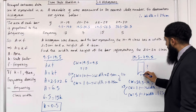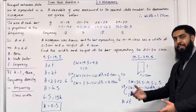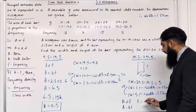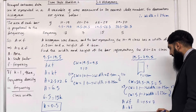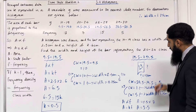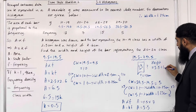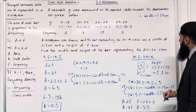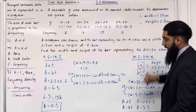Now we calculate the area of the bar. Using A equals KF, the area equals K times F, which is 0.5 multiplied by the frequency of this class interval, which is 7. So 0.5 times 7 equals 3.5. The area of the bar is 3.5 cm². To find the height, we divide the area by the width: 3.5 divided by 1.25 gives 2.8. So the height of the bar is 2.8 cm.